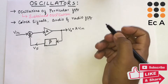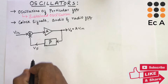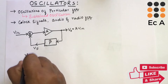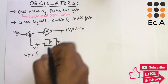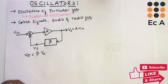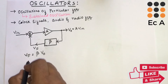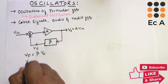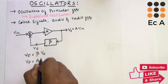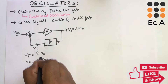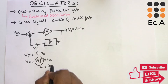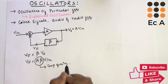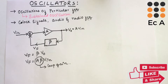V0 can be written as A times Vin. Now let us write the equation for Vf. Vf will be equal to beta times V0. We know V0 is equal to A·Vin, so substituting, Vf is equal to A·beta times Vin. This A·beta is known as the loop gain, and it is very important in producing the oscillations.